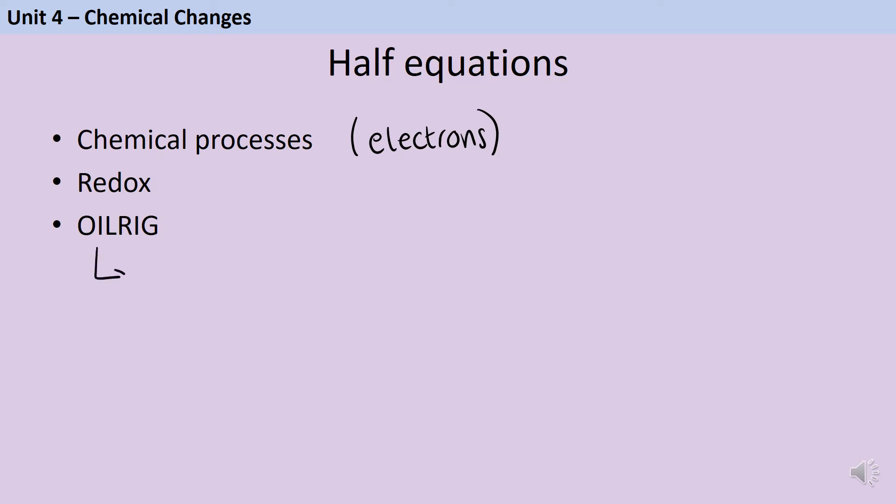To help you remember which one is which, you can use OIL RIG. So OIL RIG tells us that oxidation is the loss of electrons, whereas reduction is the gain of electrons.